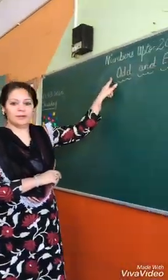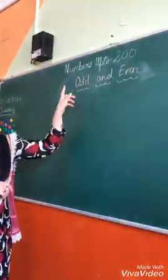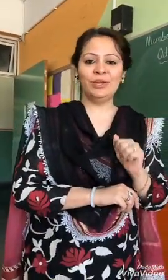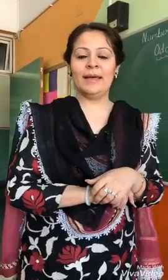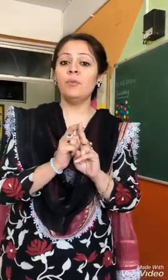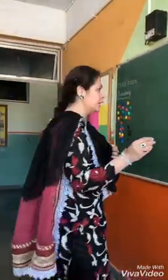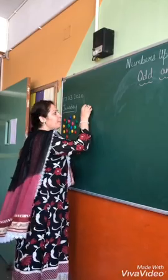Good morning friends. Today we will talk about numbers — numbers up to 200 — under which we will learn odd and even. Before starting, I would like to introduce a new word, and that is 'pair'. Any two things when they come together, they form a pair. So I will write my new word: pair.